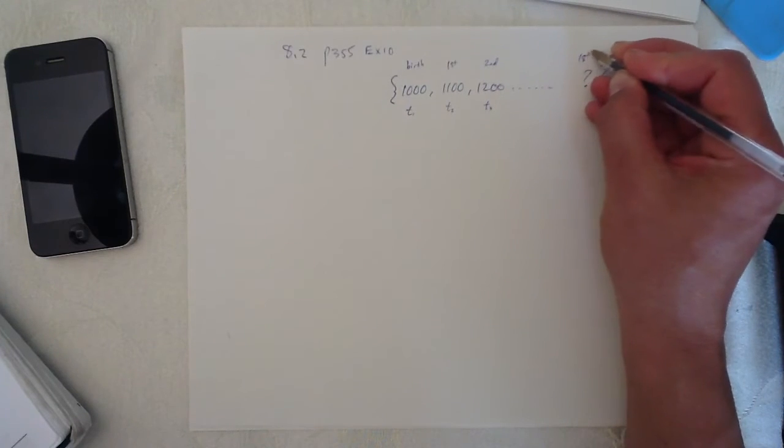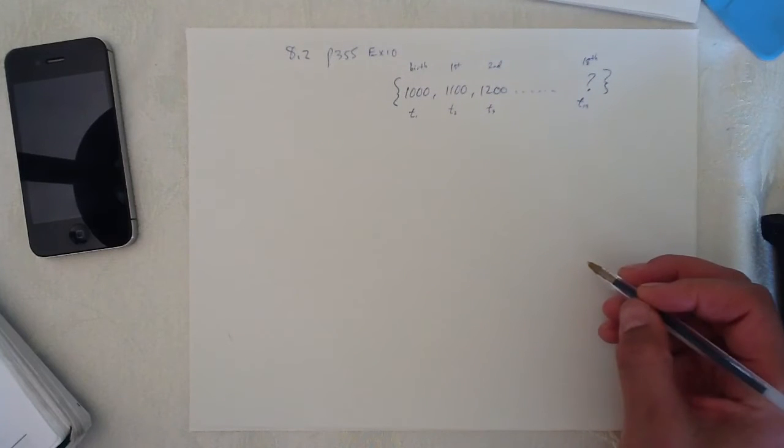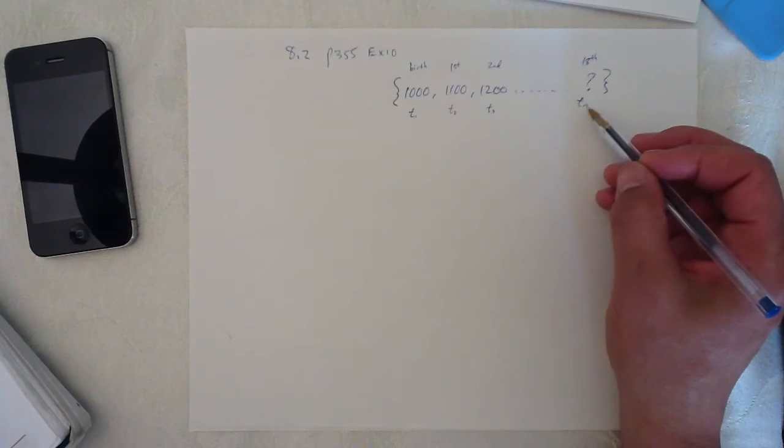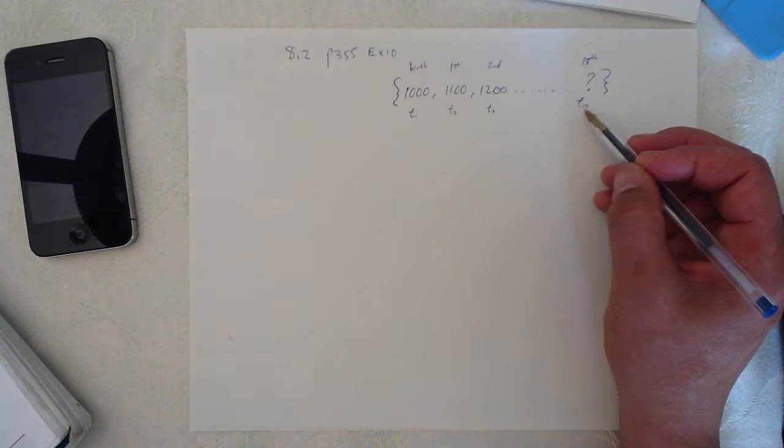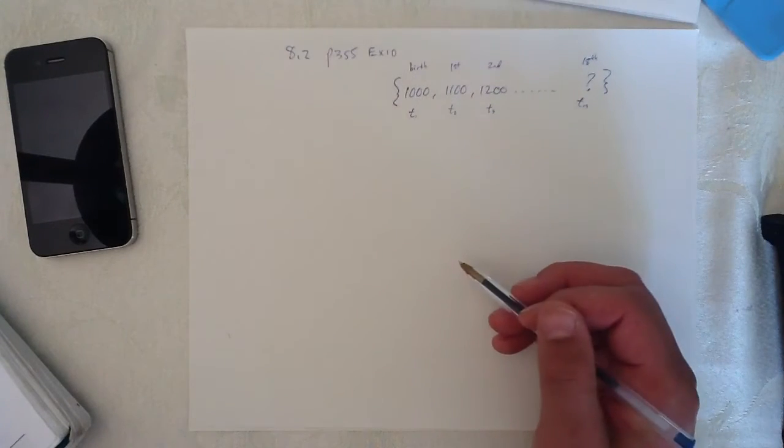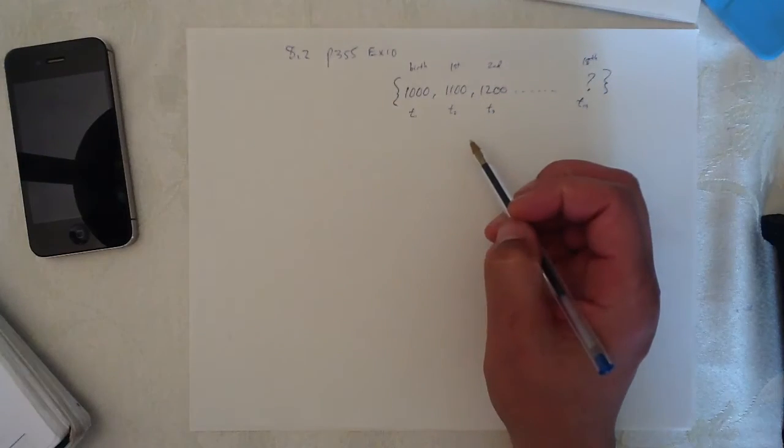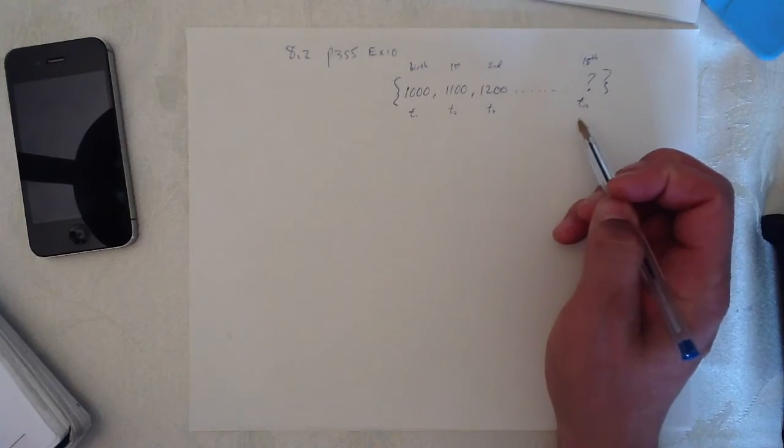So when we get to the 18th birthday, as you can imagine, that is term 19. 19 terms. And you may be tempted to just mindlessly say, 18th birthday, there must be 18 terms. But that would be forgetting about the first term here. And this happens constantly. So you have to have your wits about you and realize that there are 19 terms.